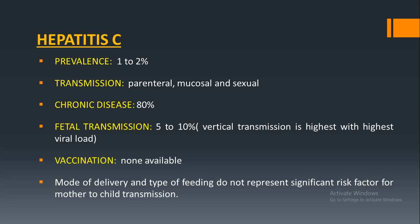Hepatitis C: its prevalence is 1 to 2%, and it is transmitted through infected blood products and injection of drugs. 80% of hepatitis C cases are chronic carriers, and fetal transmission is 5 to 10%. Vertical transmission — from mother to baby — is highest with the highest viral load. There is no vaccination for hepatitis C. Regarding mode of delivery and type of feeding, we counsel the mother for breastfeeding; mode of delivery and type of feeding do not represent a significant risk factor for mother-to-child transmission.